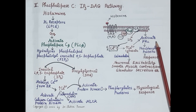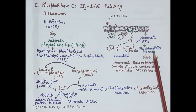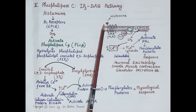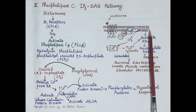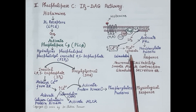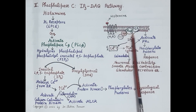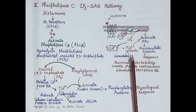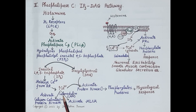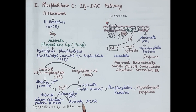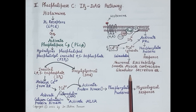Activated protein kinase C phosphorylates and activates hundreds of proteins within the cell, producing a variety of physiological responses. Histamine is the first messenger; inositol triphosphate and diacylglycerol are second messengers; and calcium is the third messenger. Calcium acts through calmodulin, activating proteins such as calcium-calmodulin protein kinase and myosin light chain kinase, producing responses like neuronal excitability, smooth muscle contraction, and glandular secretions.